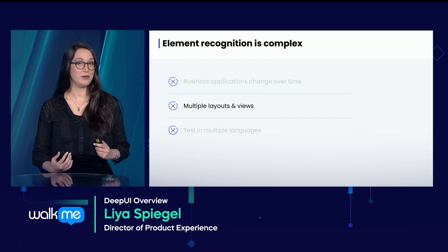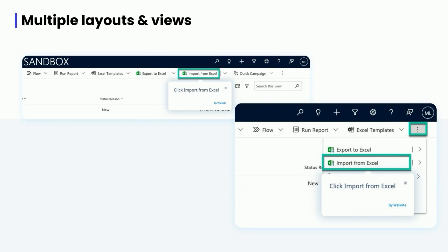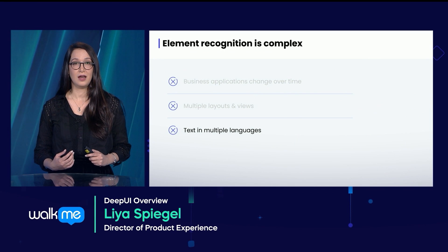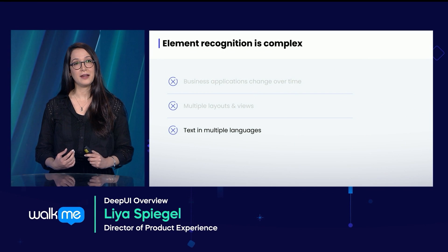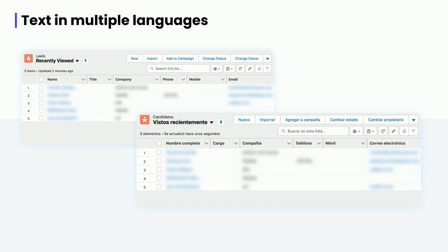To show you an example, we see this type of situation all the time, where a menu tab that's available for one user will be collapsed from view for other users using the same application, just depending on their monitor size. Up next, multi-language. I could be creating my WalkMe guidance or automation while the underlying app is rendered in English, but some of our customers have global audiences that use localized versions of the same application.